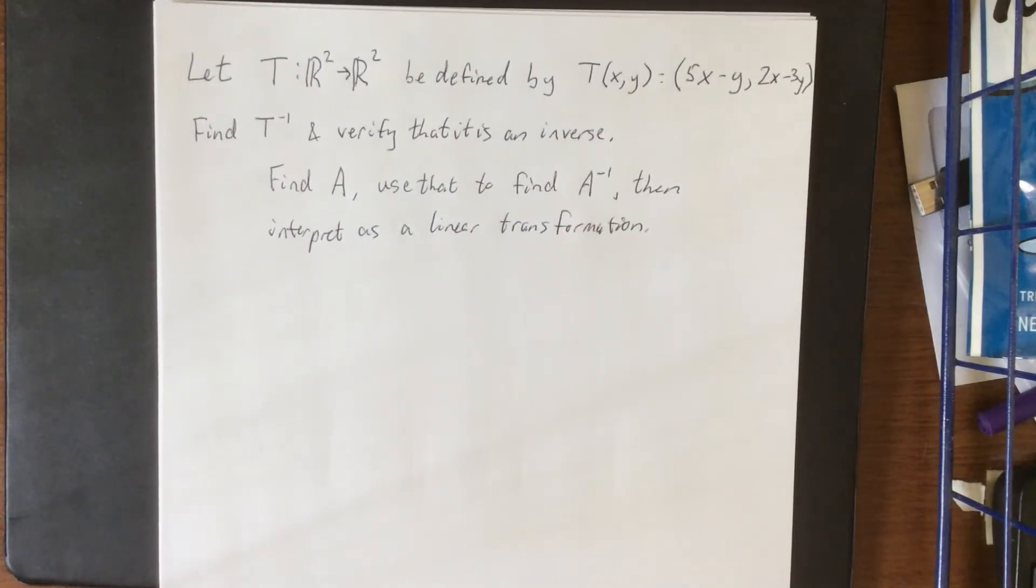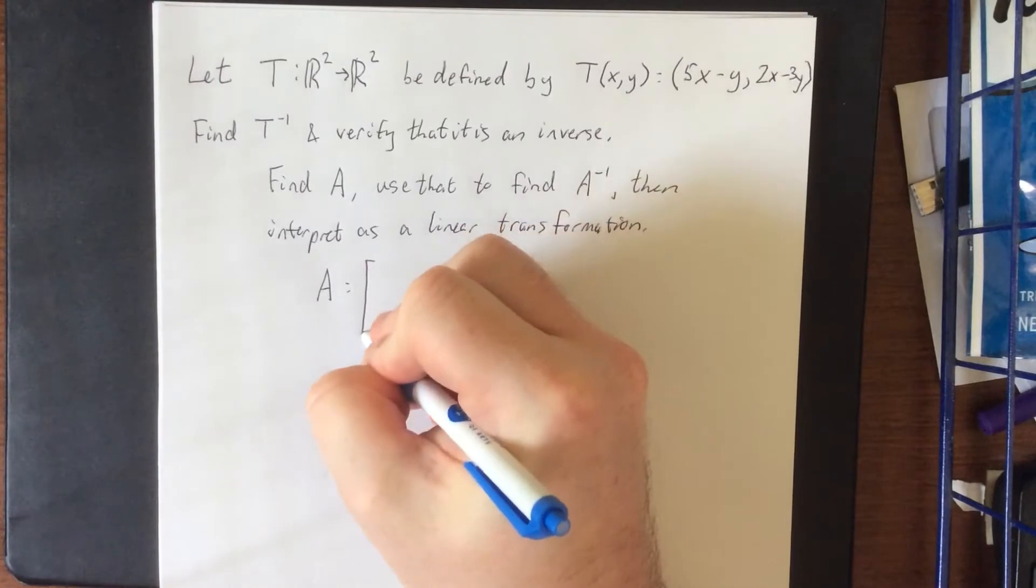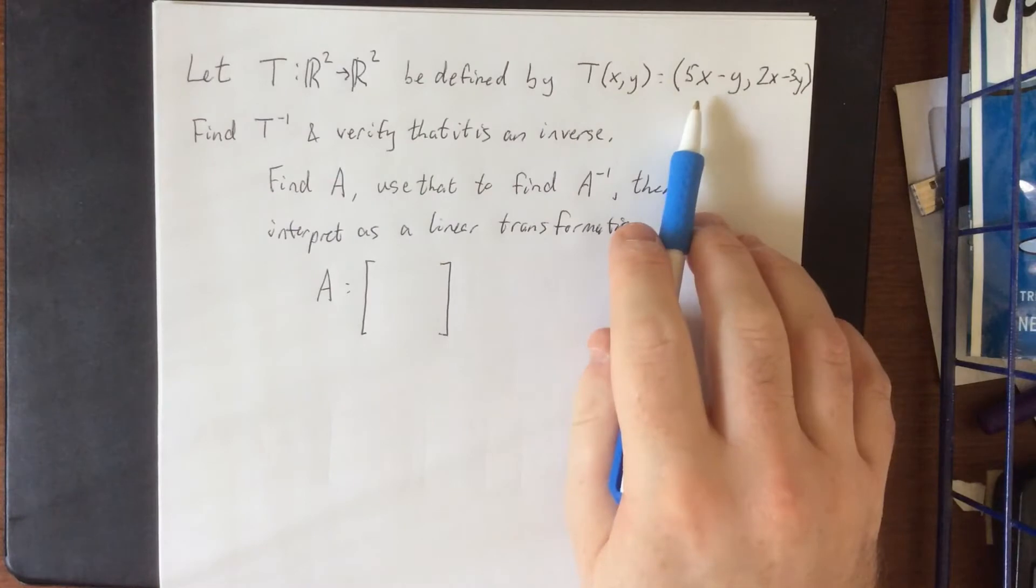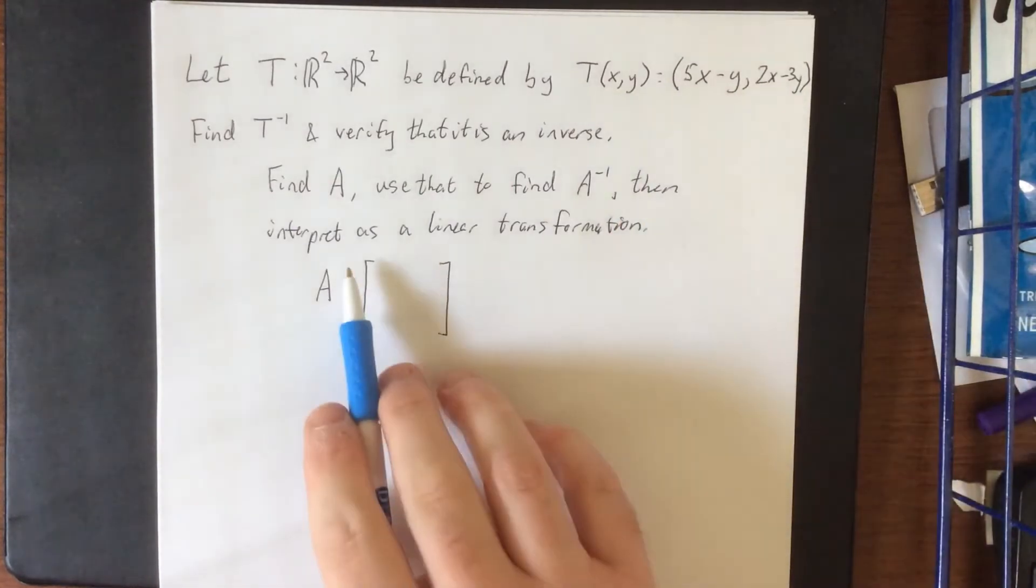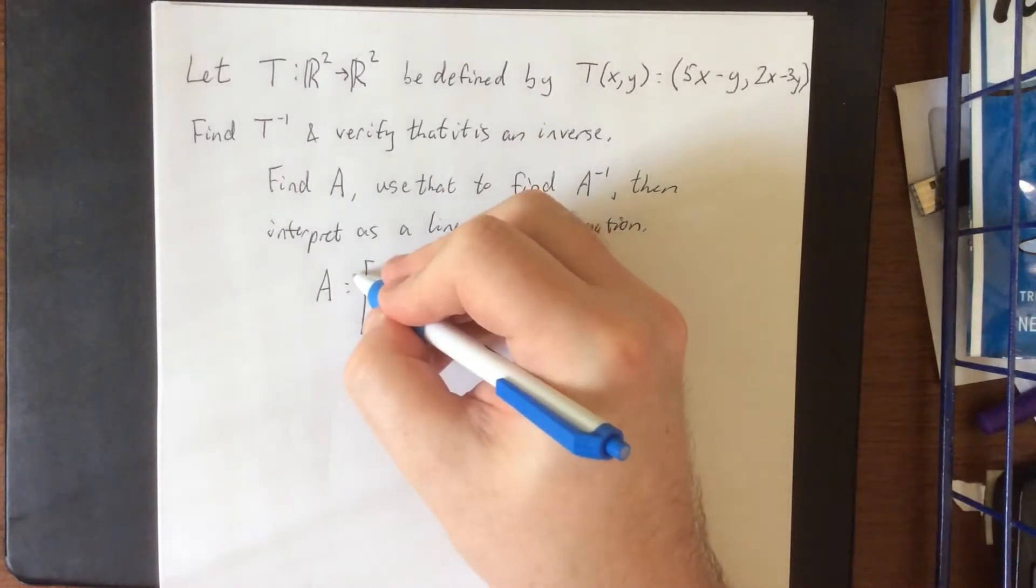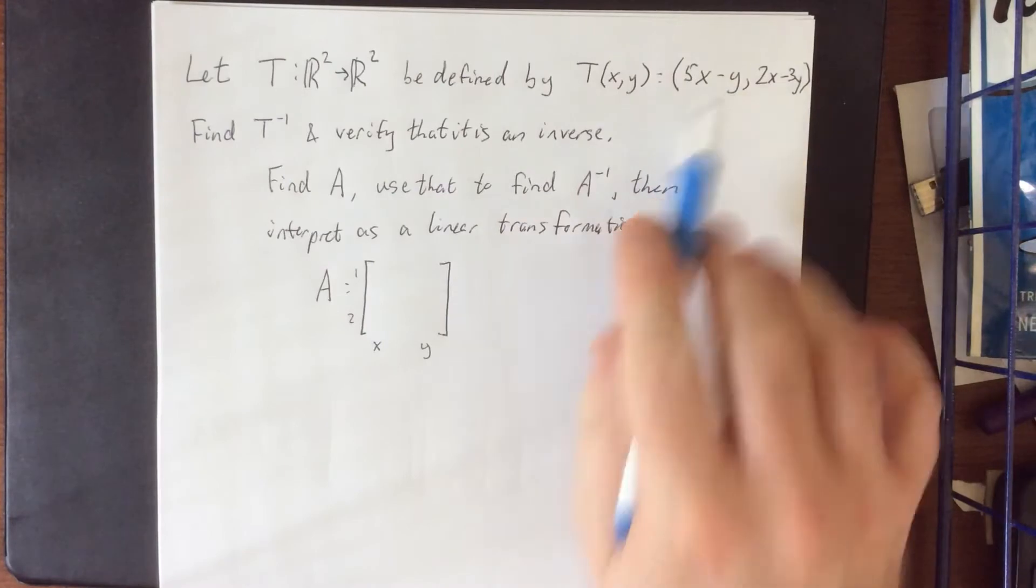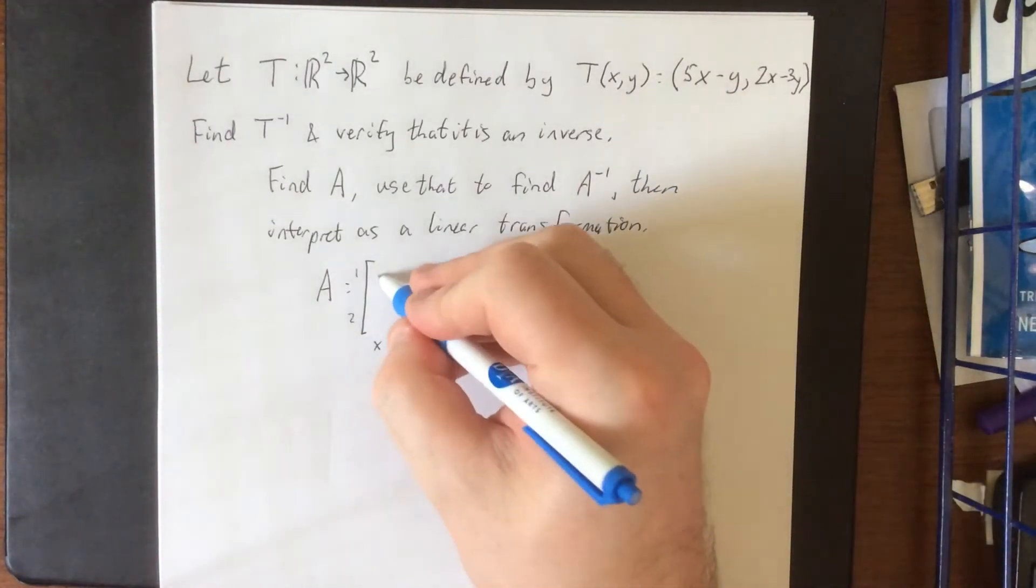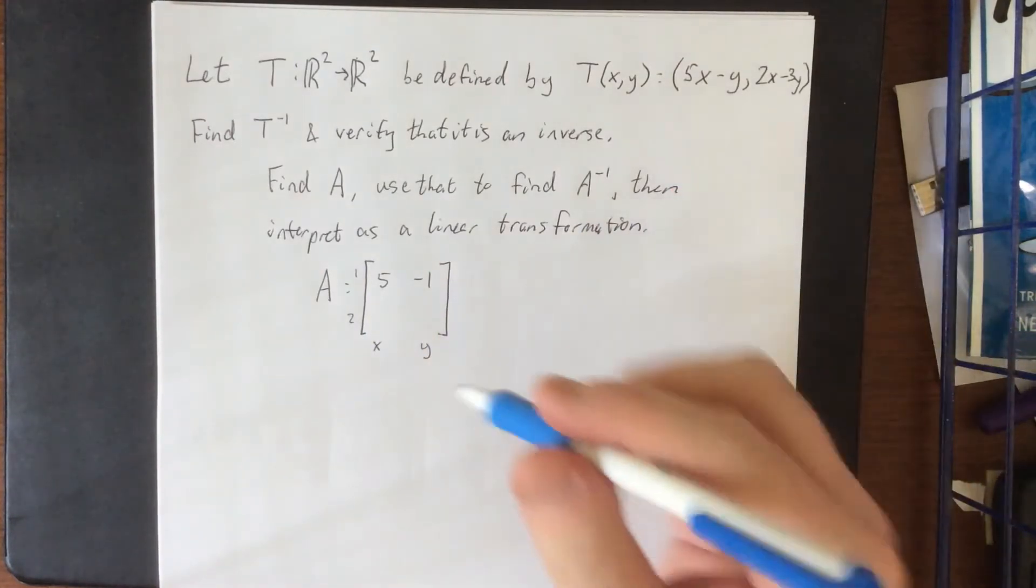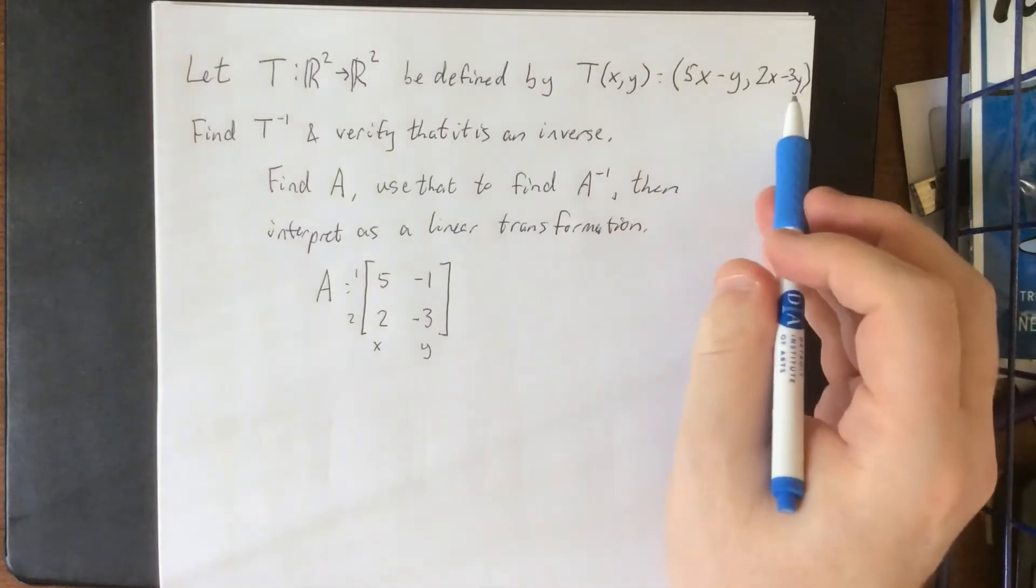The first thing we'll need to do is actually find the matrix of our transformation, which we'll refer to as A. As I mentioned in previous videos, rows will be components and columns will represent the coefficients of the variables. So for the first component, 5x minus y across the first row is interpreted as 5 negative 1. The second component across the second row is 2 negative 3 for the 2x minus 3y.